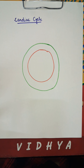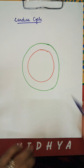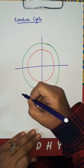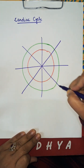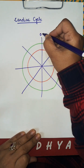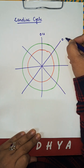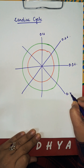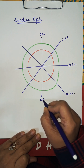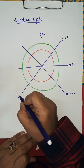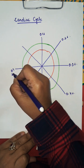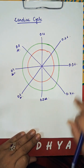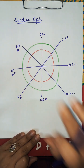Now divide it into eight parts: one, two, three, and four, and mark it 0.1 second, 0.2 second, 0.3 second, 0.4 second, 0.5 second, 0.6 second, 0.7 second, 0.8 second. So our cardiac cycle will be of 0.8 second.